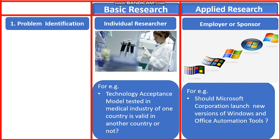When an individual researcher is trying to identify the problem himself — for example, whether a technology acceptance model tested in one country is valid in another country or not — when a researcher is trying to find out the answer for such a question, we can say that he is doing basic research. And when a company or corporation like Microsoft is trying to find out whether it can launch a new version of Microsoft Windows and office automation tools or not, we can say that Microsoft is doing applied research. This is the first point of the difference between basic research and applied research.